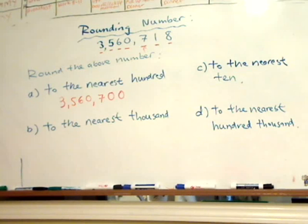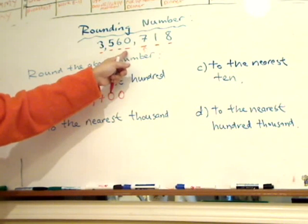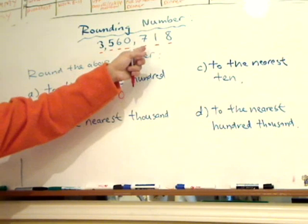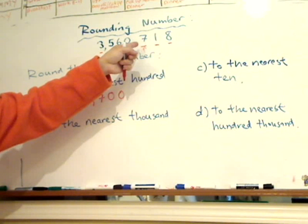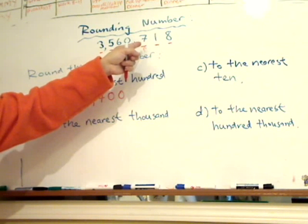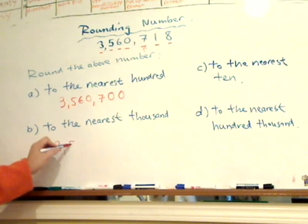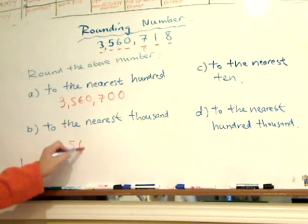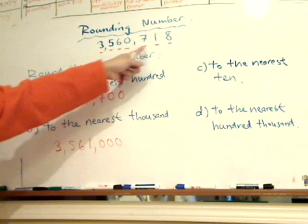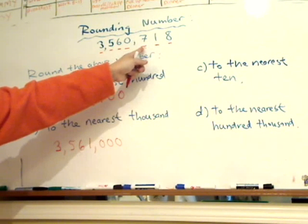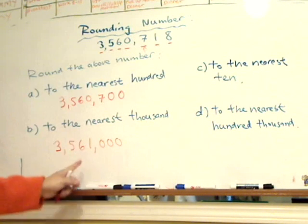For the second question, to the nearest thousand — here's the thousands place. We look at the number before that, which is the hundreds digit: seven hundred. Because it's greater than five, we're going to round up. So the answer would be three million, five hundred and sixty-one thousand.